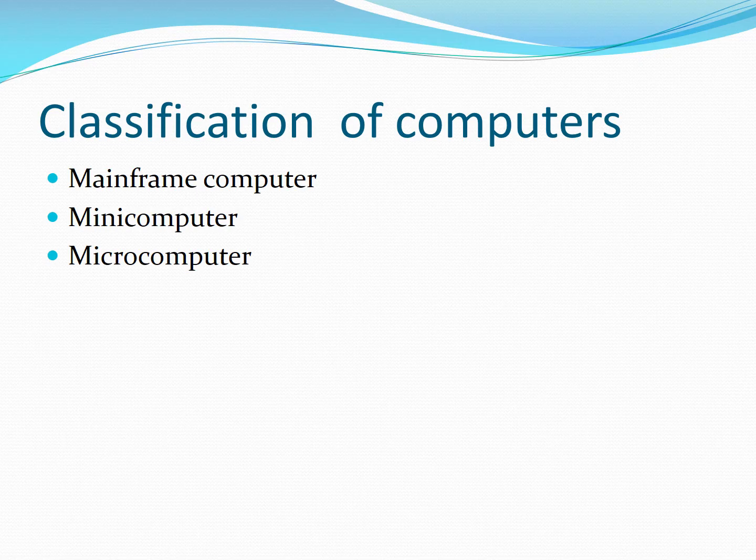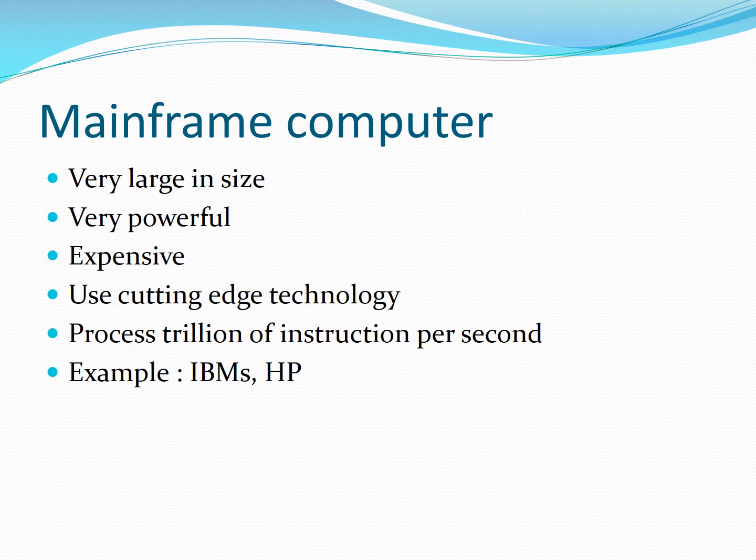There are three classifications of computers: mainframe, mini computer, and micro computers. Computers are classified into different categories based on their size, speed, storage capacity, and the number of users they can support. Mainframe computers were developed in the early 1940s and they are very powerful and very large computers.